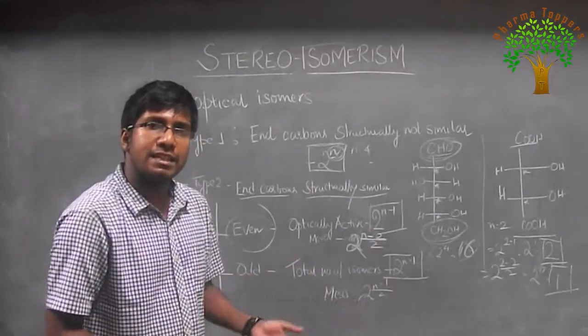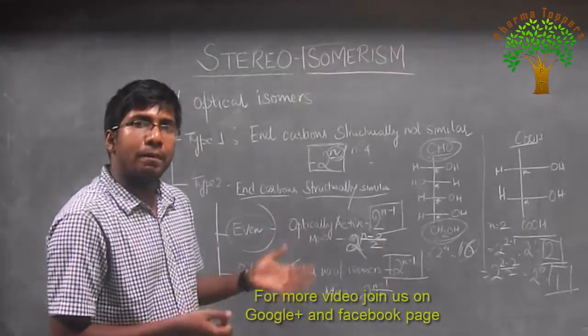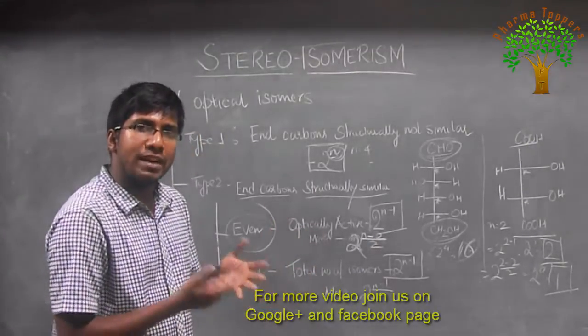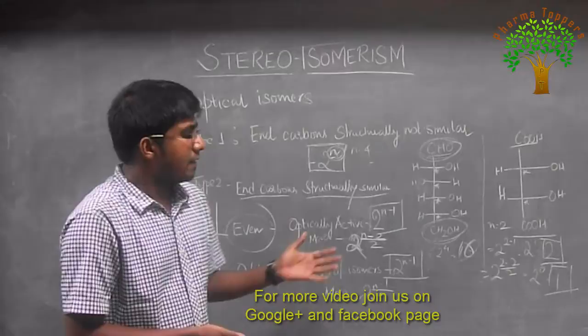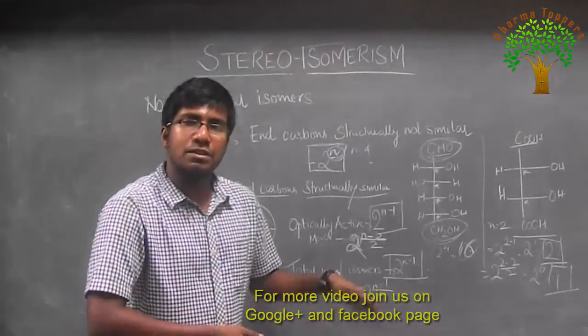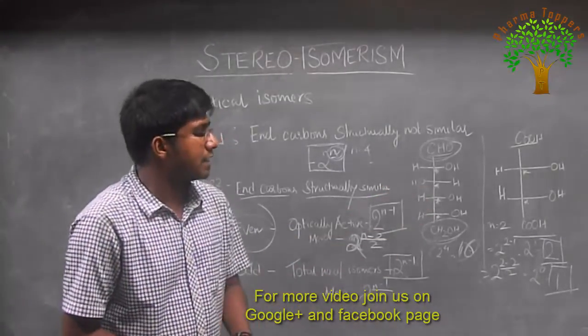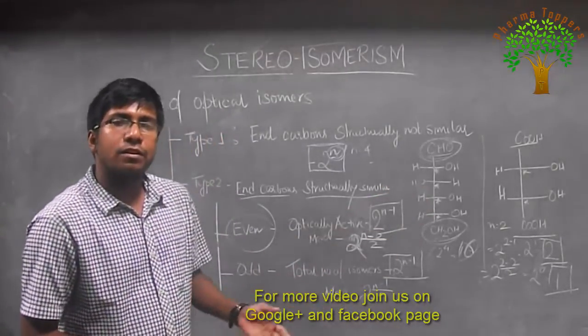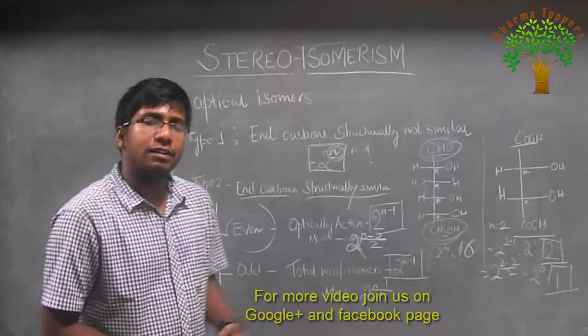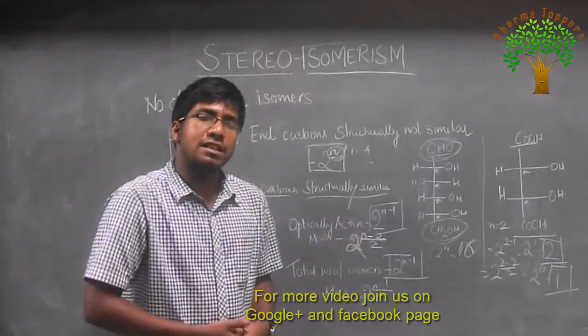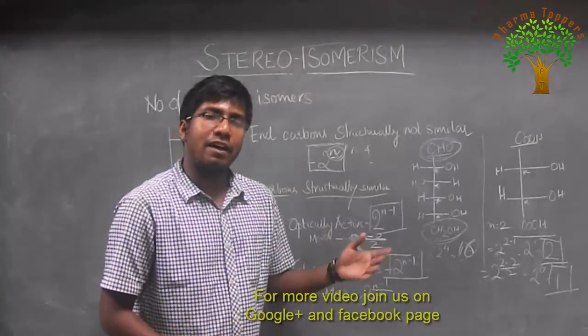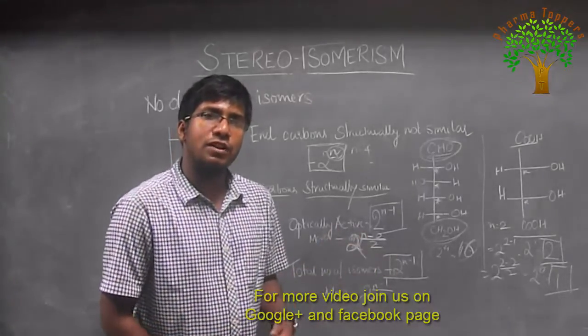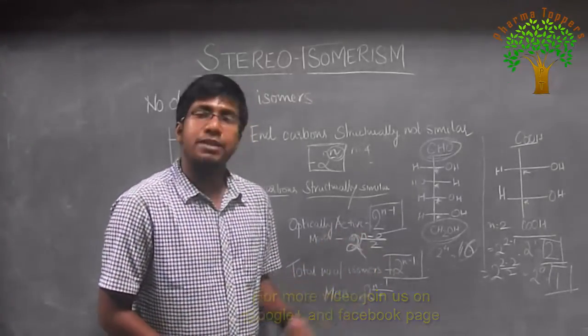This is a very important and easy part of the topic. Just apply these formulas and you can count all the optical isomers. Continue with our further discussions on stereochemistry. Thank you.